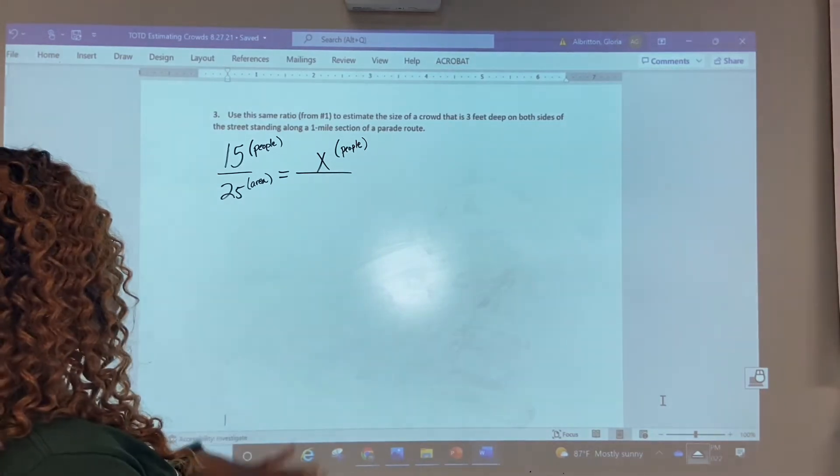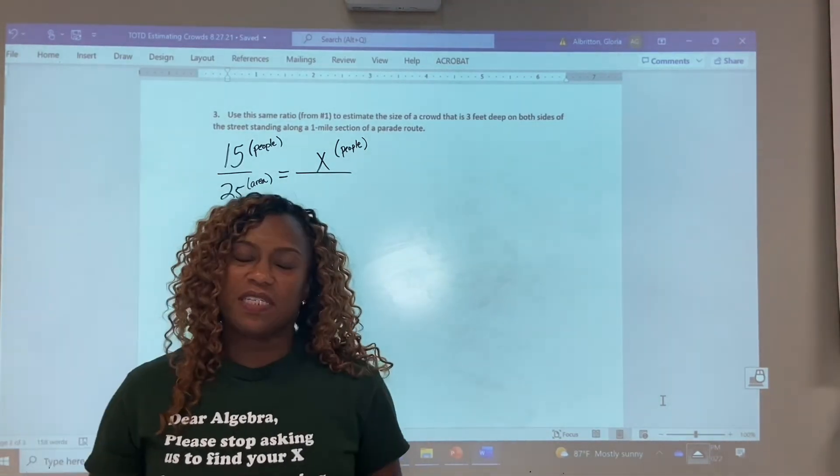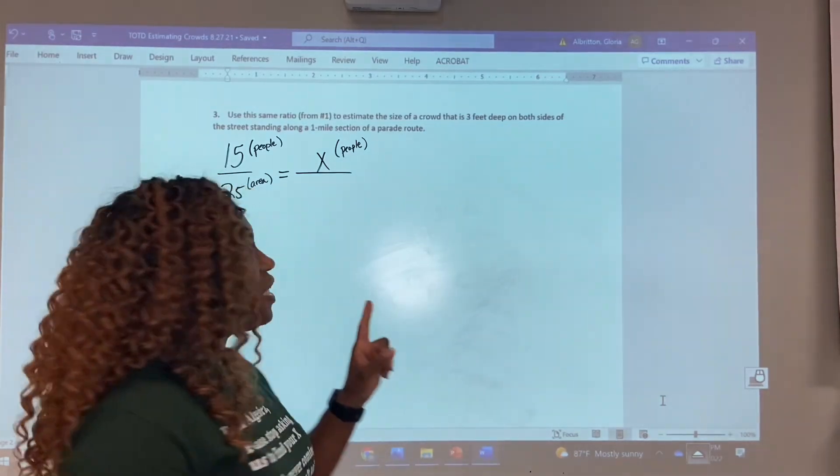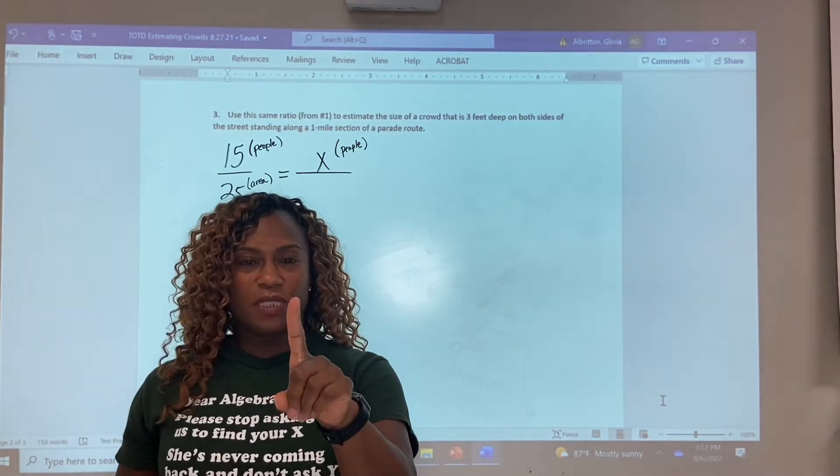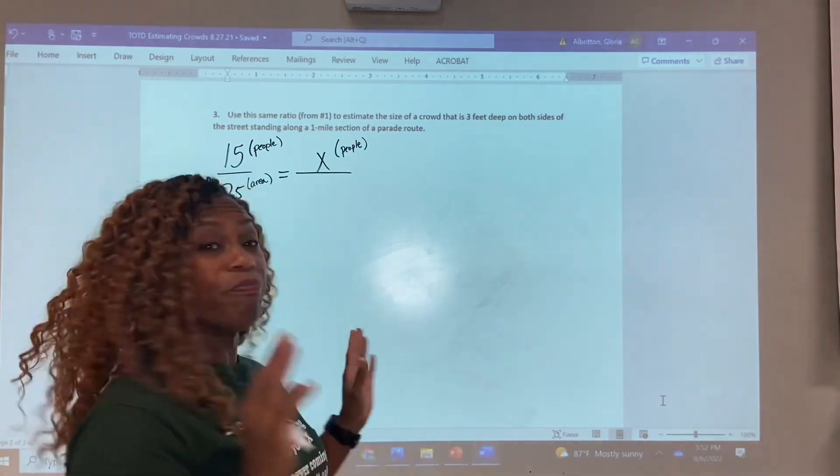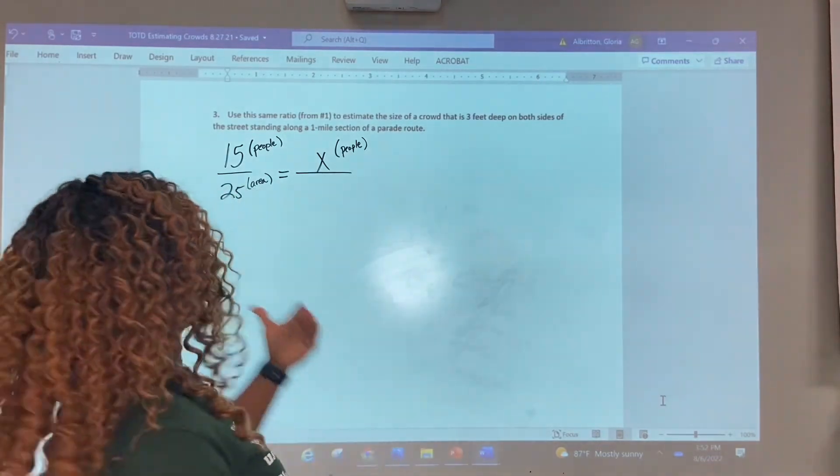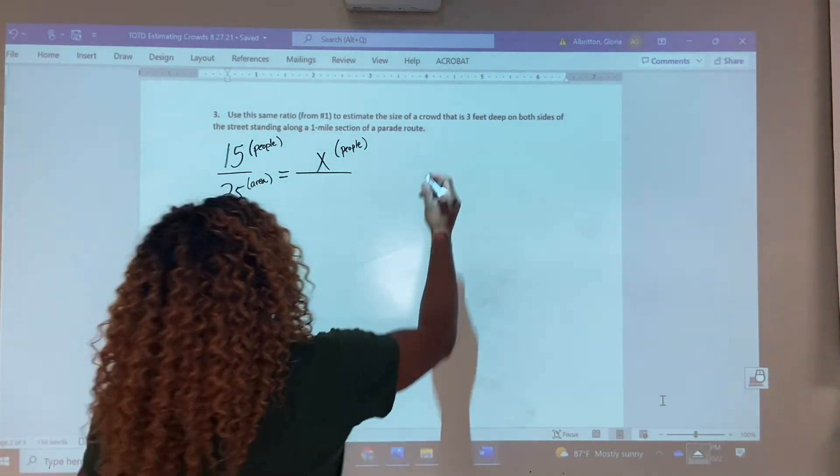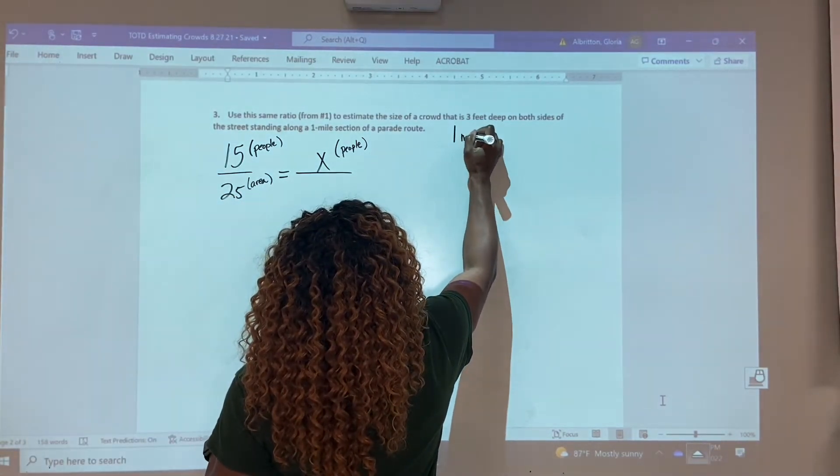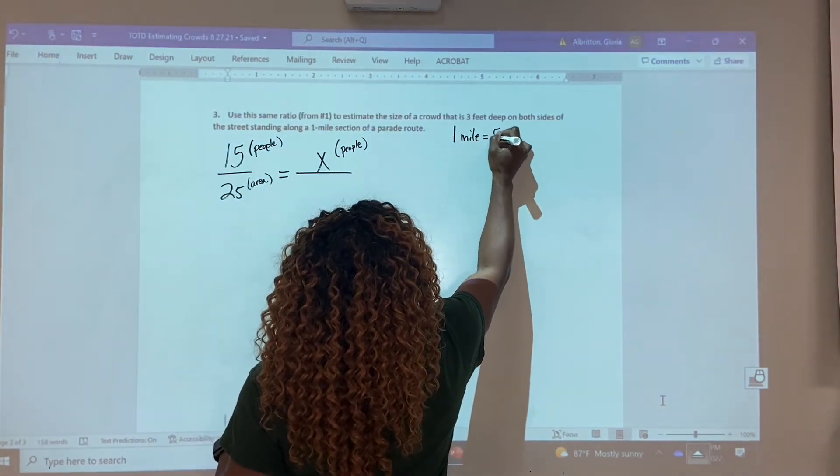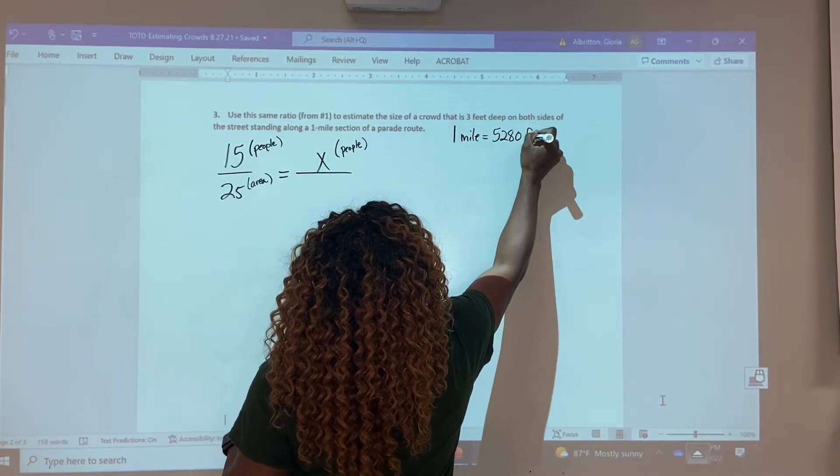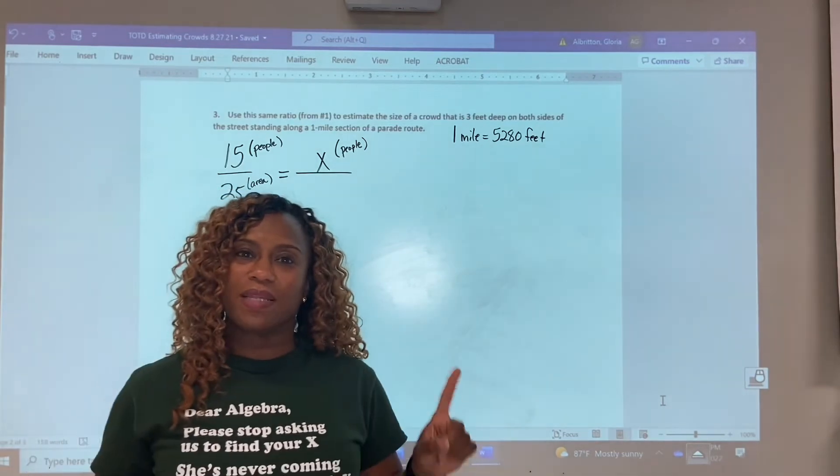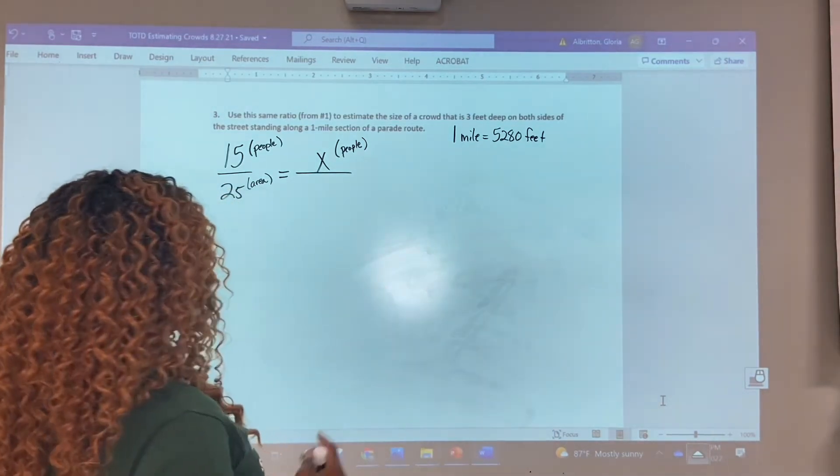But this time, what is the area? So we're estimating the size of the crowd that's three feet deep. Look at the difference here. On number two, if you look back at problem number two, it said three feet deep on one side of the street. Now, this one says three feet deep on both sides of the street, but it's still standing along the one mile section of a parade route. We also discussed the fact that one mile had to be converted into feet in order to match this feet when we calculated our area, our length times width. So let's go ahead and do that.